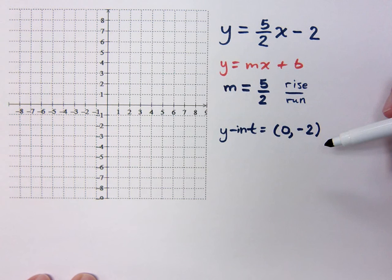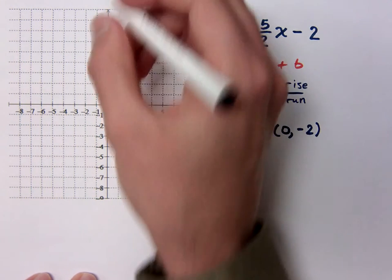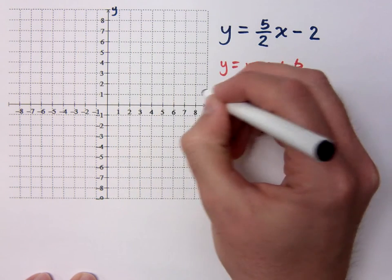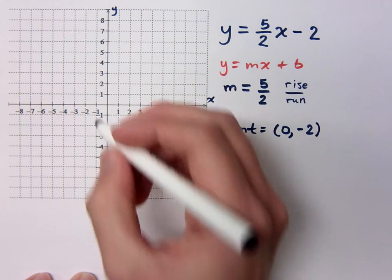Where does every y-intercept occur? Every y-intercept is on the y-axis, right? So when I plot it, it goes here. Remember, this is the y-axis. This is your x-axis. So 0, negative 2 is right here.